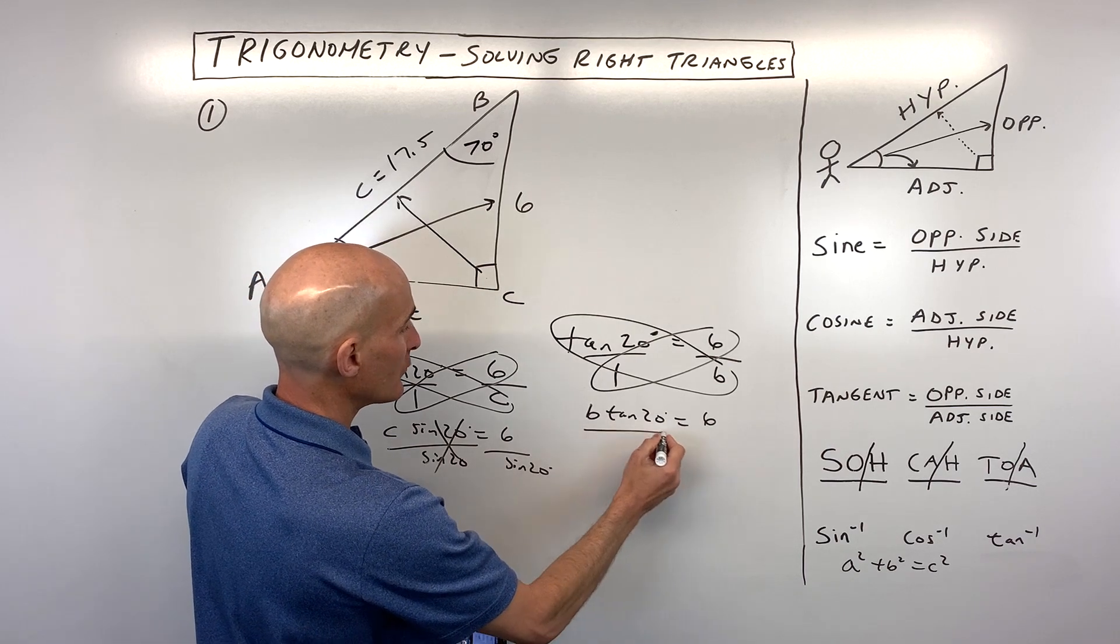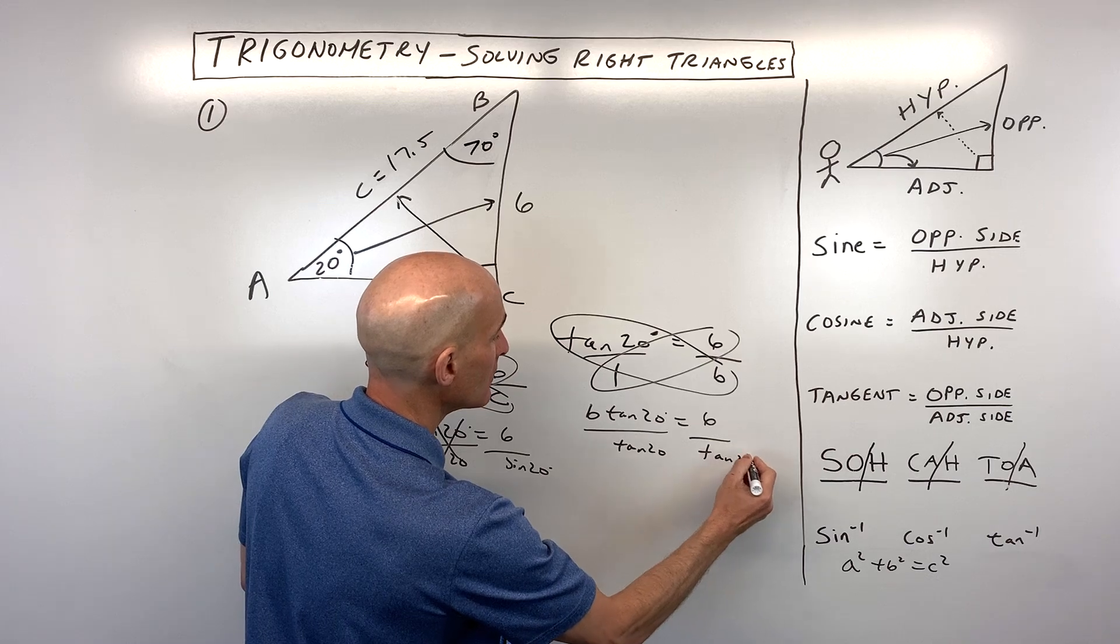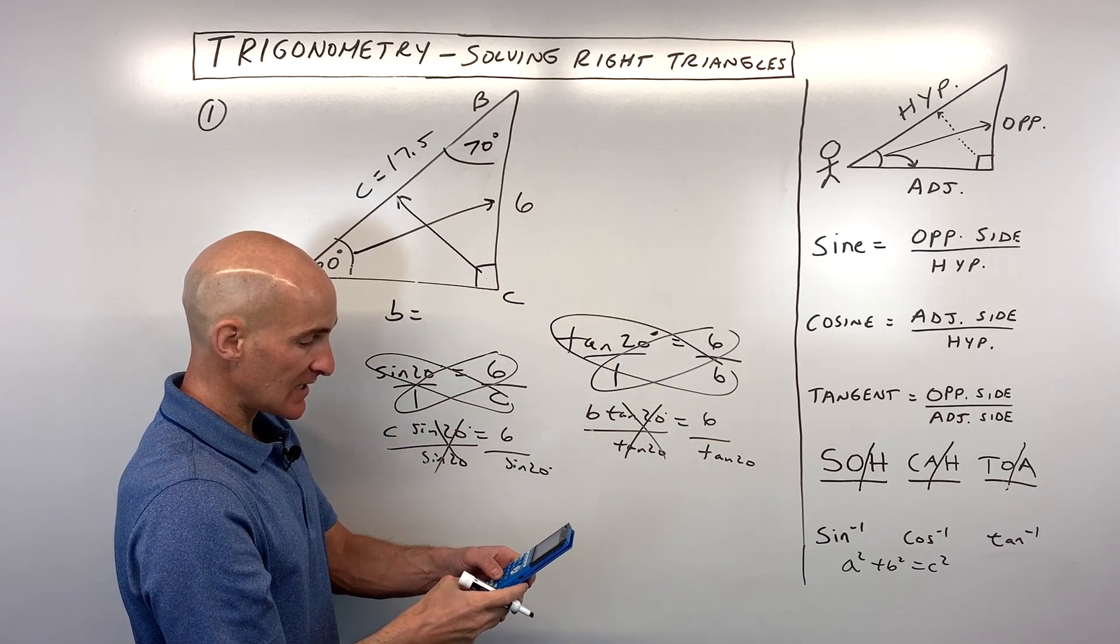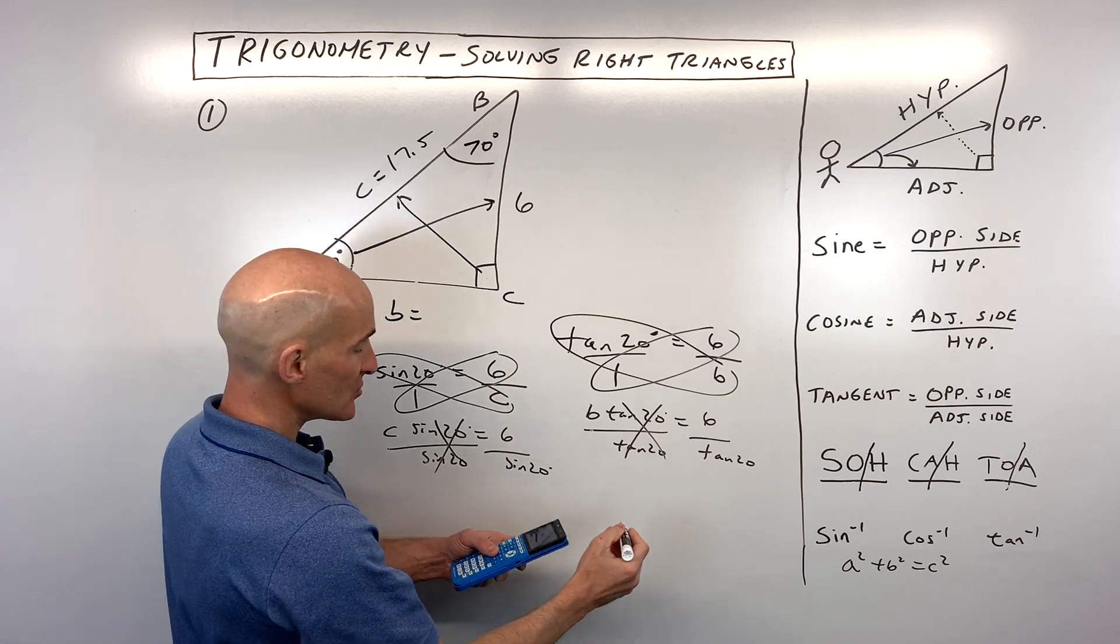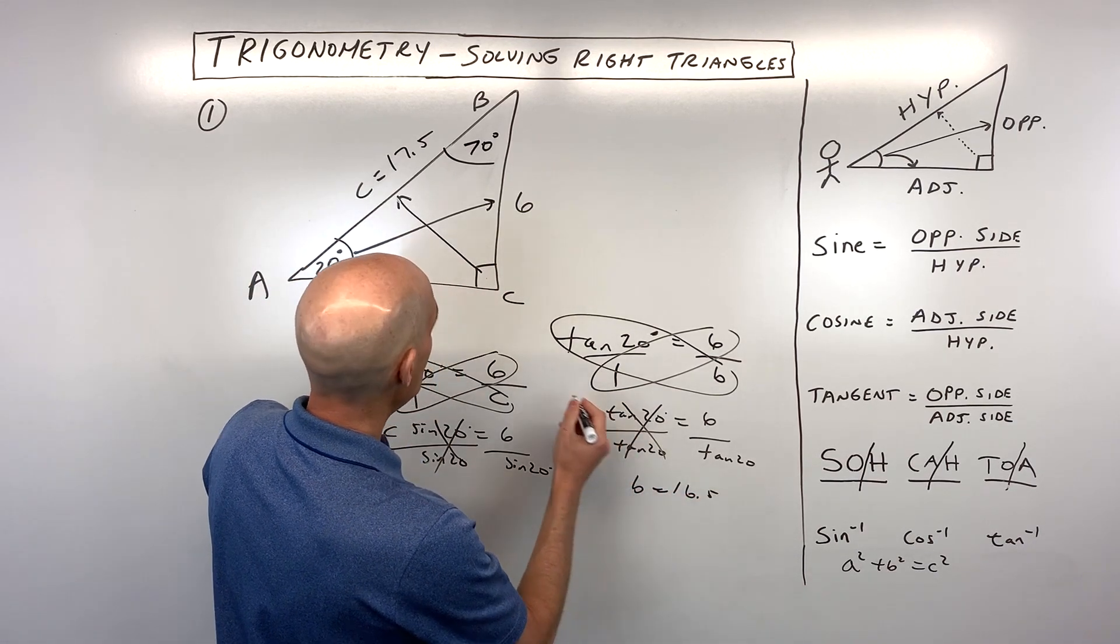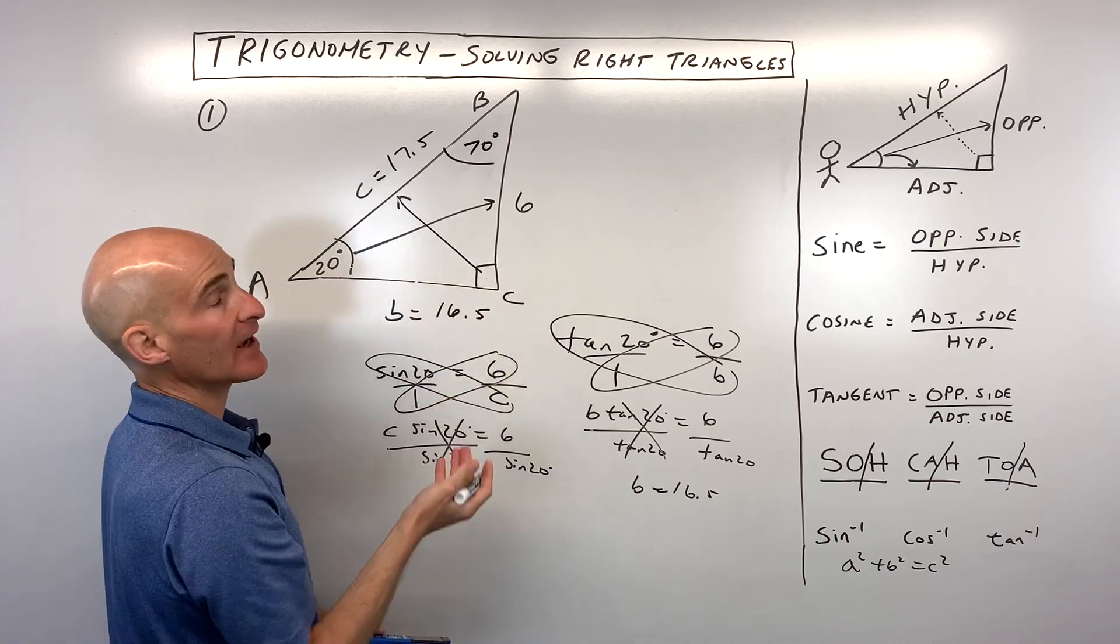If we divide both sides by the tangent of 20, we get B by itself. So let's go to the calculator. 6 divided by tangent of 20, that comes out to 16.5. And now we've solved the triangle. We found all the sides, we found all the angles, and you've got it.